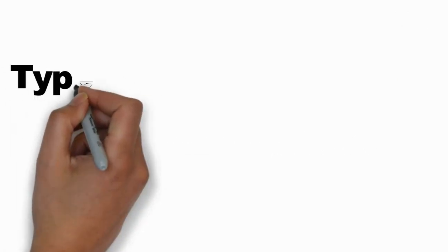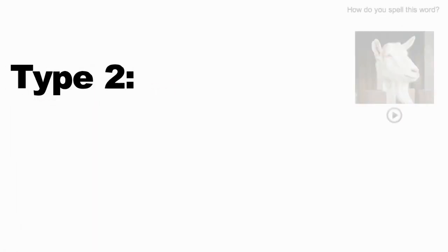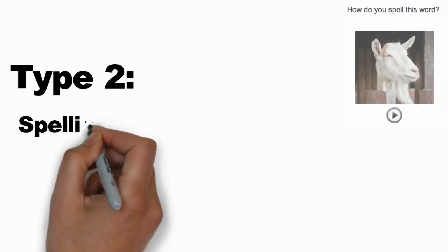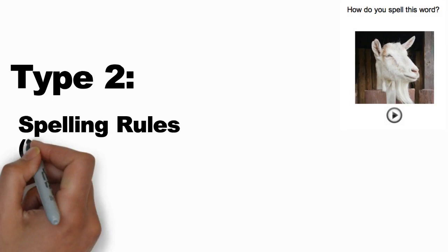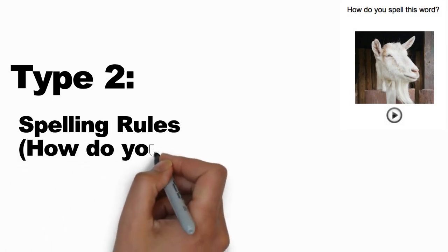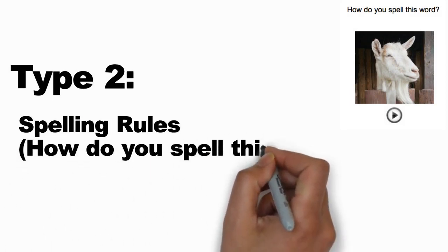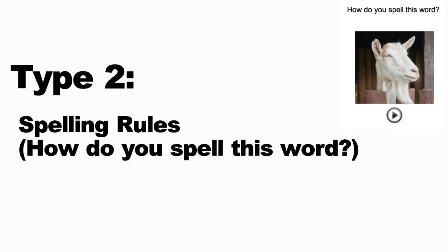The second type of flashcard is the inverse of the first. You'll hear a recording of a word you've already encountered — in this case CHEVRE — and you're going to try and remember how to spell it. This will help ingrain your language's spelling rules in the context of real words.